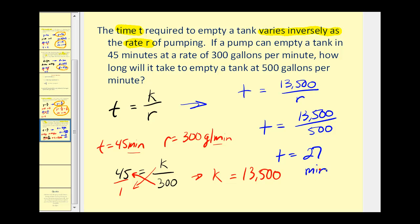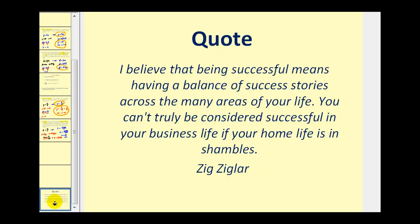That should make sense because if it takes 45 minutes at a rate of 300 gallons per minute, if we increase the rate to 500, it should take less time — and it does. It went from 45 minutes to 27 minutes. I hope you found this video helpful. Thank you for watching.